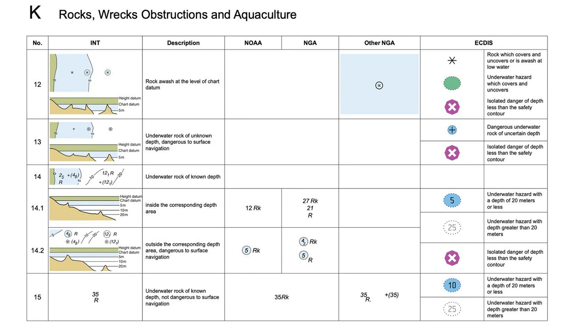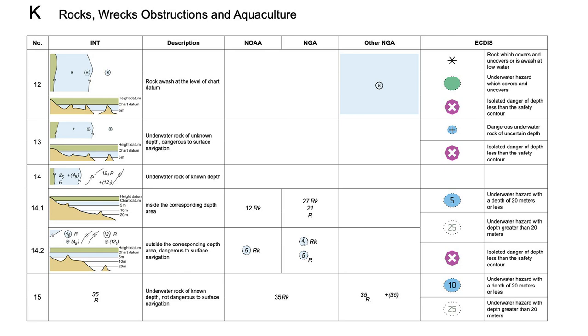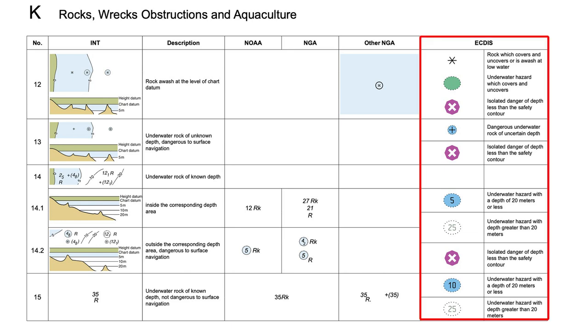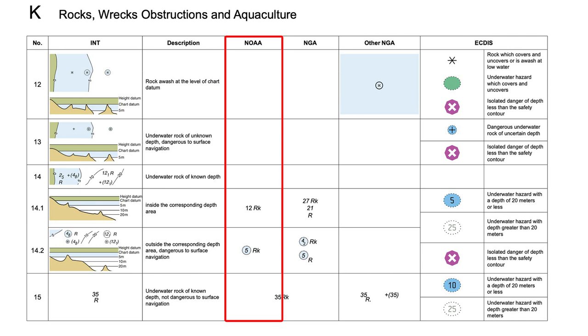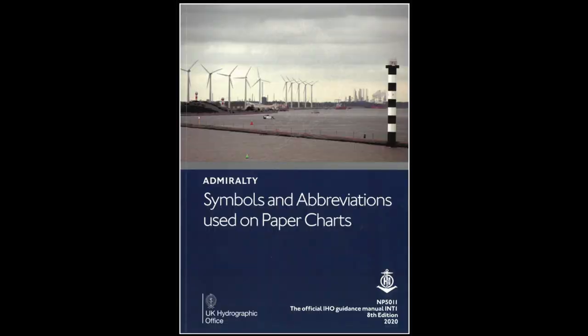On US charts, symbols are also published in chart number 1, and the layout is very similar to the Canadian chart number 1, with the exception that there are more columns. The left column is used for international charts, the middle column for NOAA charts, a fourth and fifth column for NGA symbols — National Geospatial Intelligence Agency — and the furthest right column is for ECDIS, which stands for Electronic Chart Display and Information Systems. Most US charts are NOAA, so that will be the most commonly used column. In the UK, publication NP5011 is published by the UK Hydrographic Office. I have included links to PDFs of US and Canadian chart number 1 publications, but could not find a free link to NP5011.